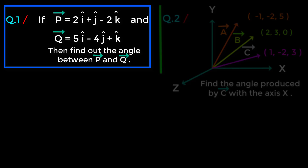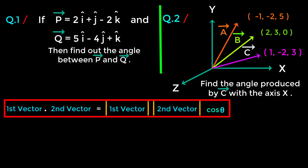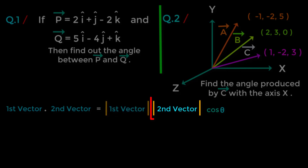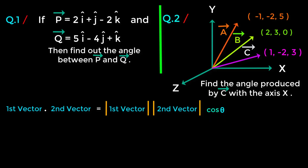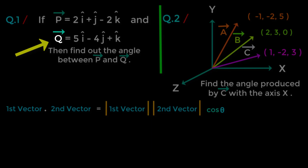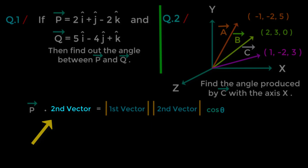For the first question, we can apply the dot multiplication formula or the cross multiplication formula. Since the dot multiplication formula is comparatively easier, we will use it. The format is: first vector dot second vector equals magnitude of first vector times magnitude of second vector times cos theta. Since theta is the angle between two vectors, we need to find its value. Here the first vector is p and the second is q.